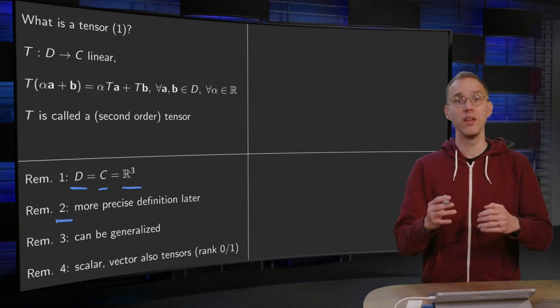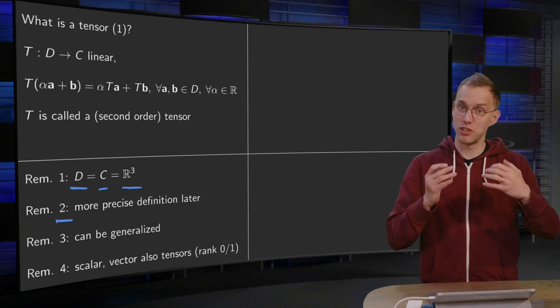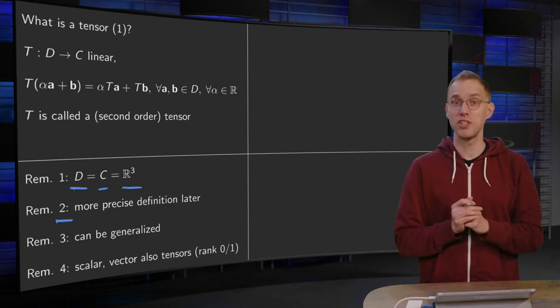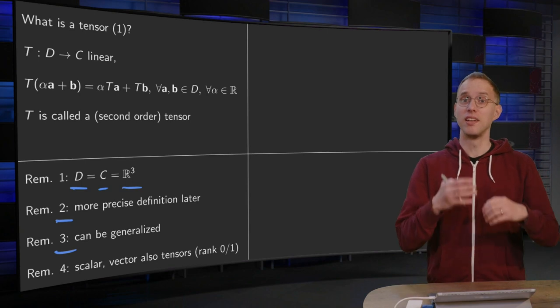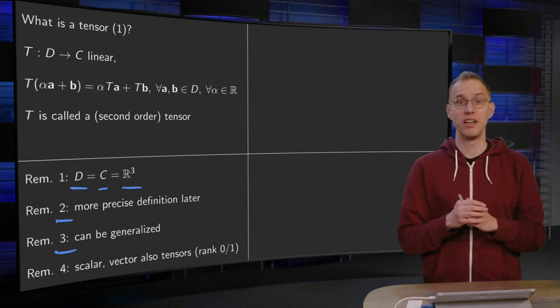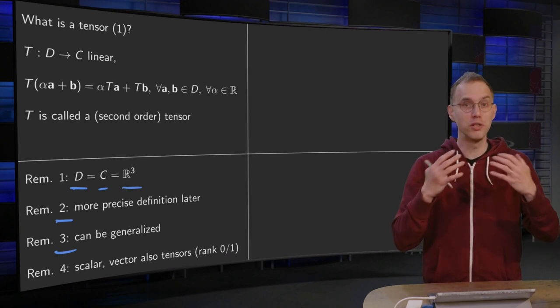Second remark. We will also define a second order tensor or tensor in general a bit more precise. That will follow later. For now, this definition is sufficient. Remark 3. This tensor can be more generalized, much more, very much more than we will do.